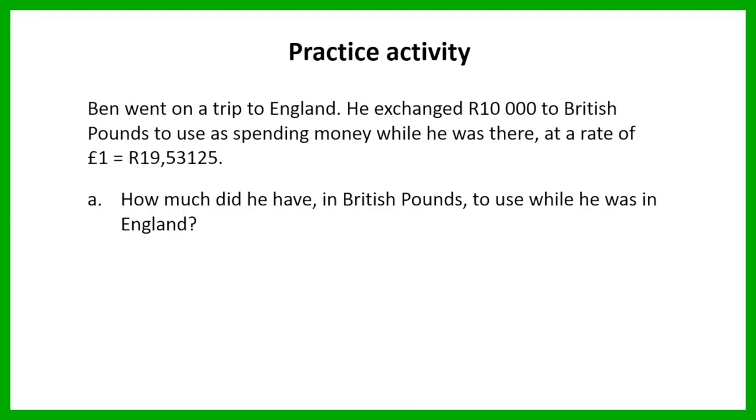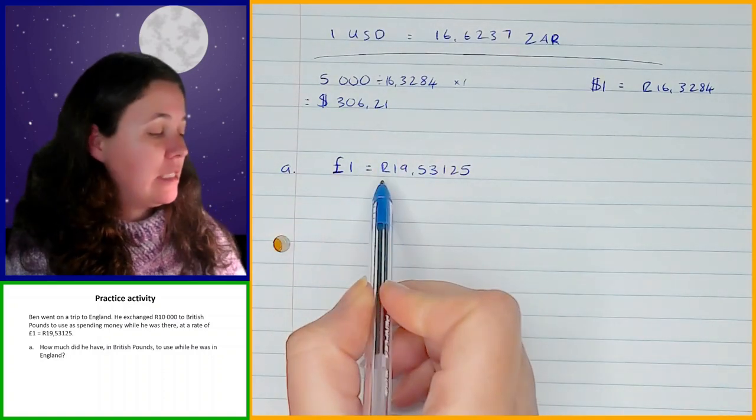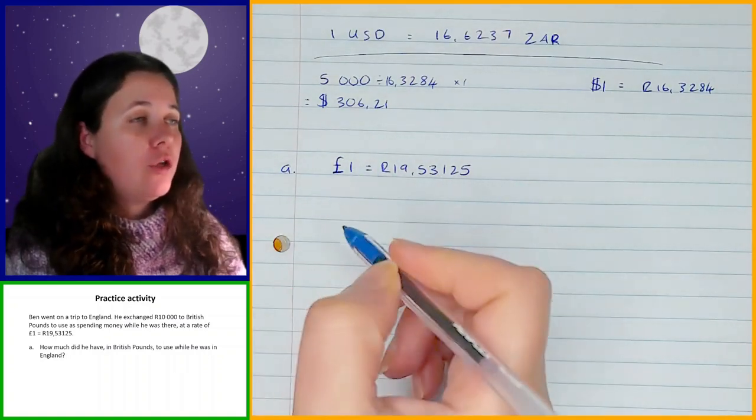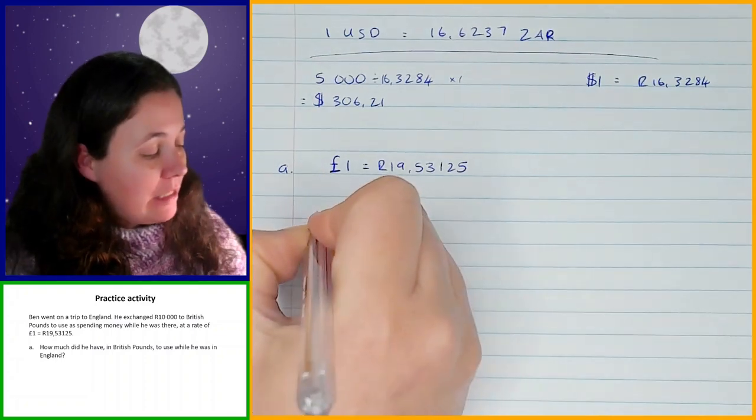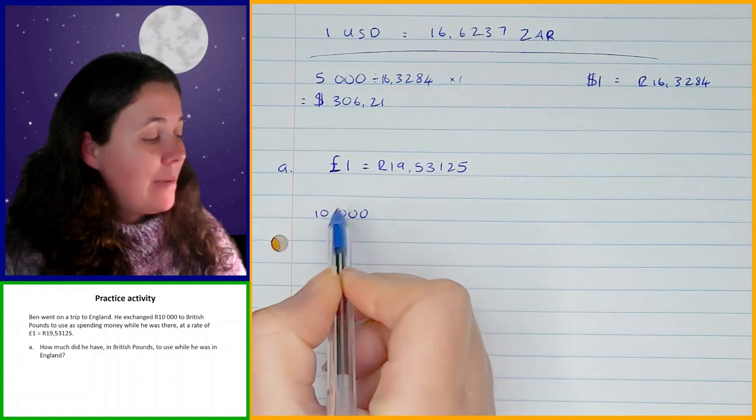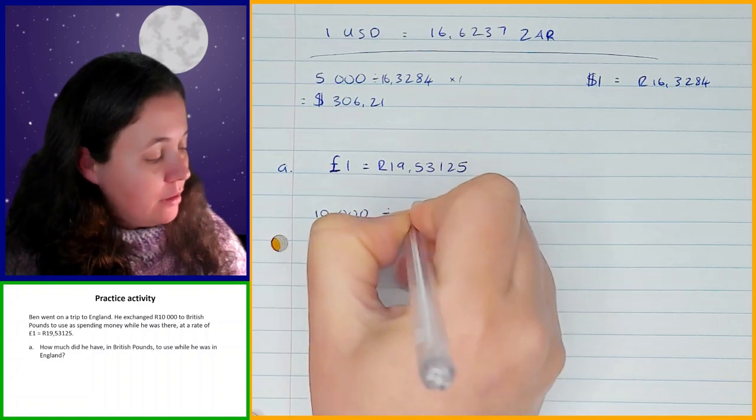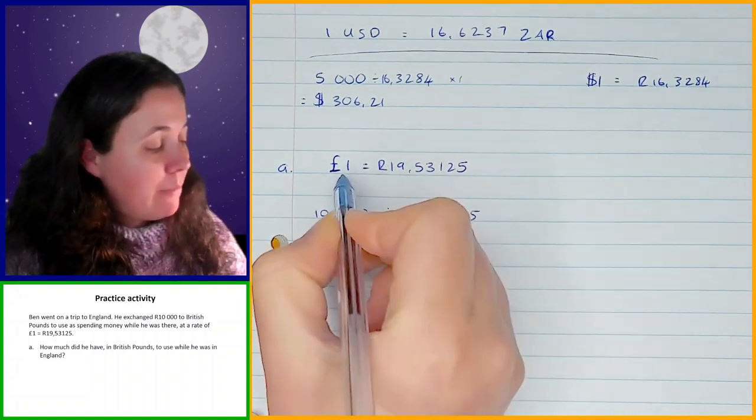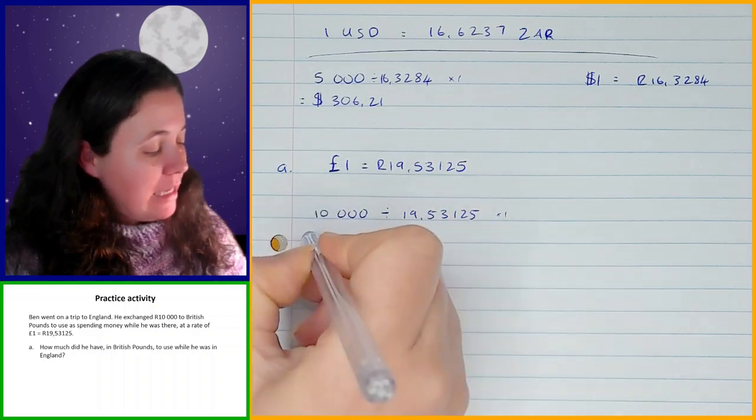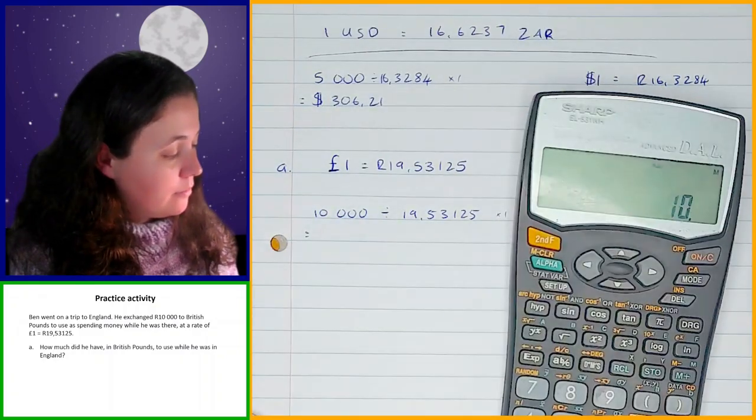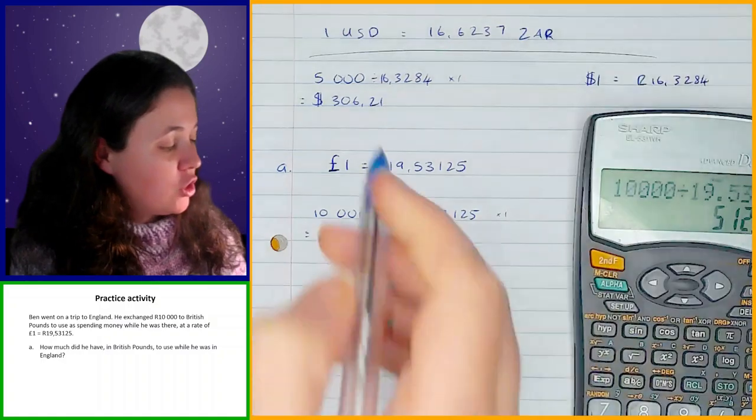You should hopefully be done with that by now so let's go through that example. So in question a you have been given the exchange rate is one pound is 19.53125 rand. You know that Ben has got 10,000 rand and he wants to convert these to British pounds. So now let's take that 10,000, it is rands so I'm going to divide by the rands part of my exchange rate, so divide by what I have and multiply by what I want. Now remember we don't actually have to write that because it's not going to affect anything. So divide by what we have, multiply by what we want, and that will give us 512 pounds.